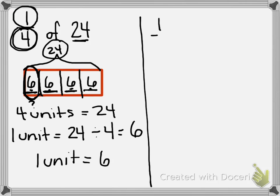I'm going to show you a little trick of how to solve this problem a little quicker. We're going to change the word of to a multiplication sign. 1 fourth times, and we're going to change our whole number to 24 over 1, which still gives us the value of 24.